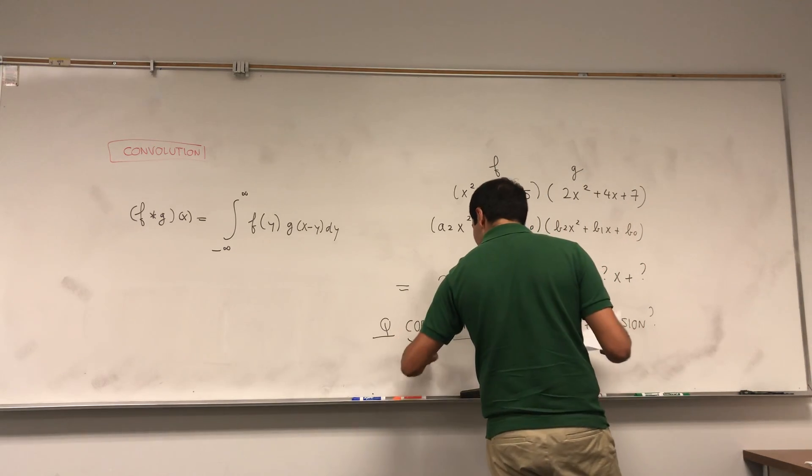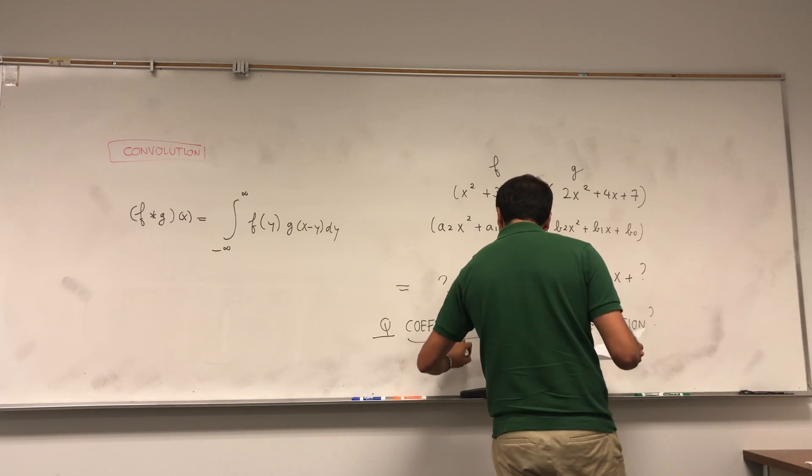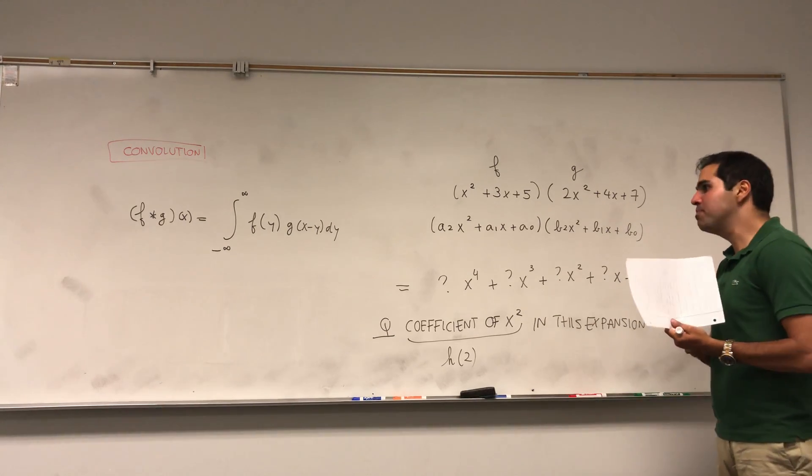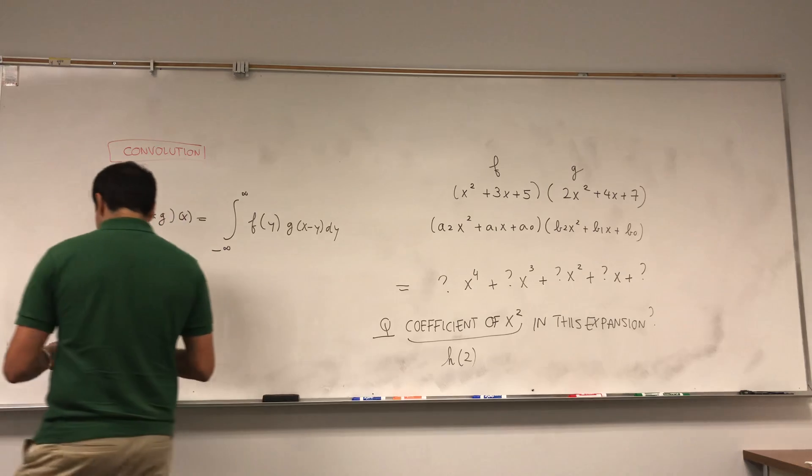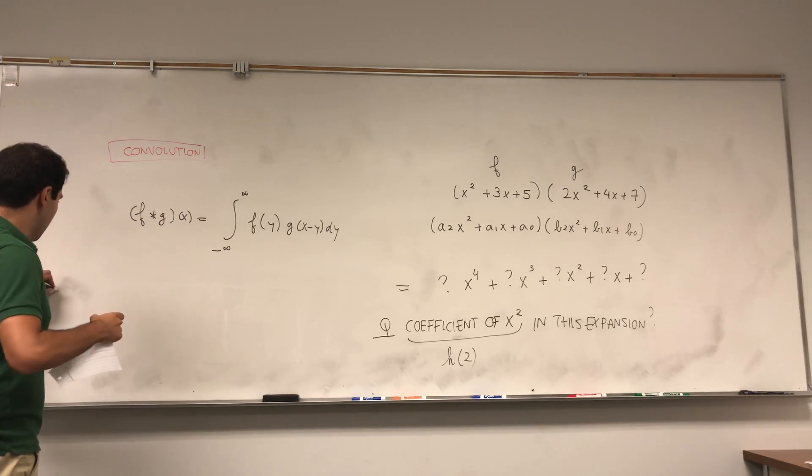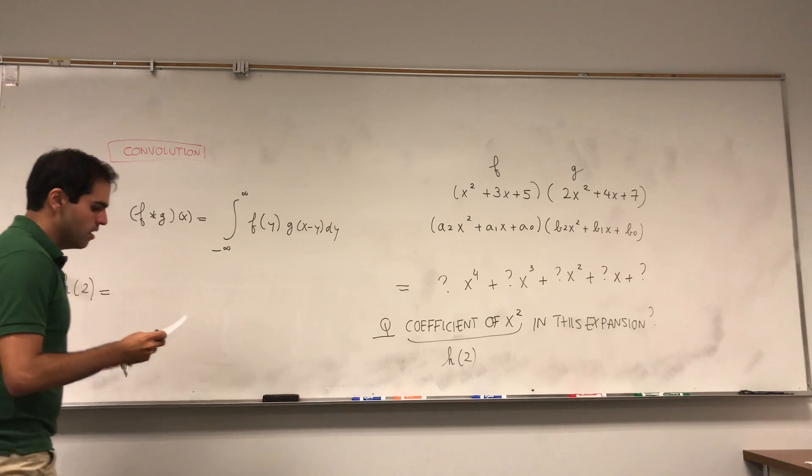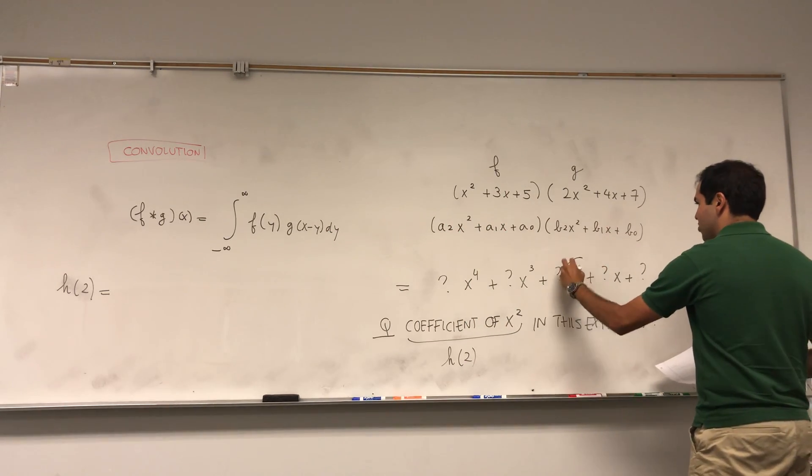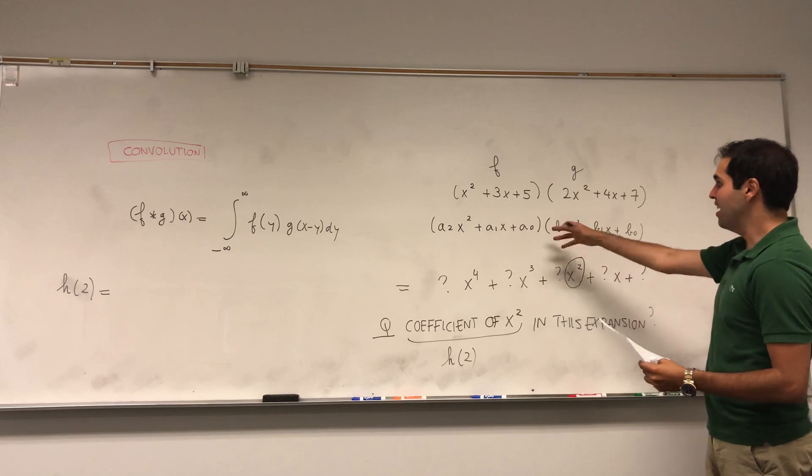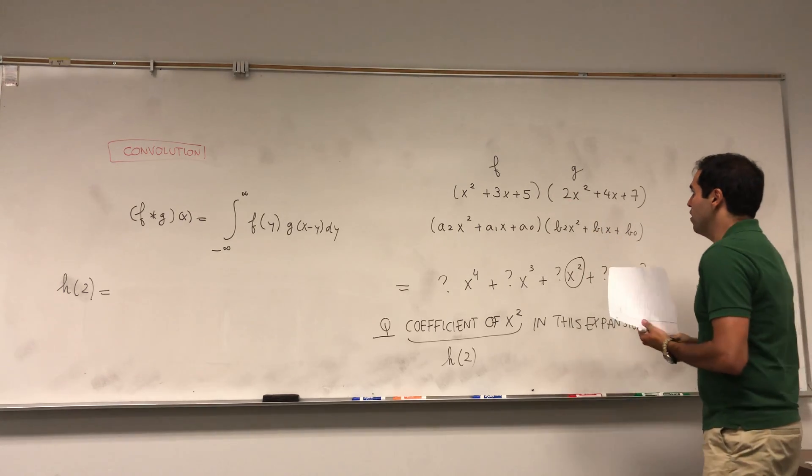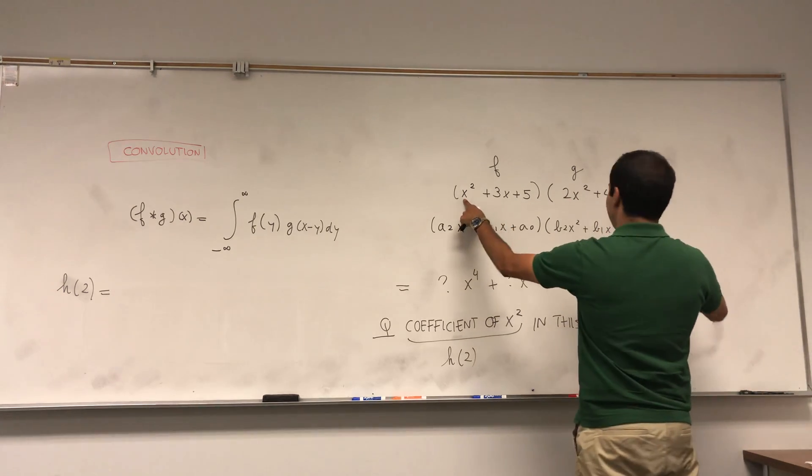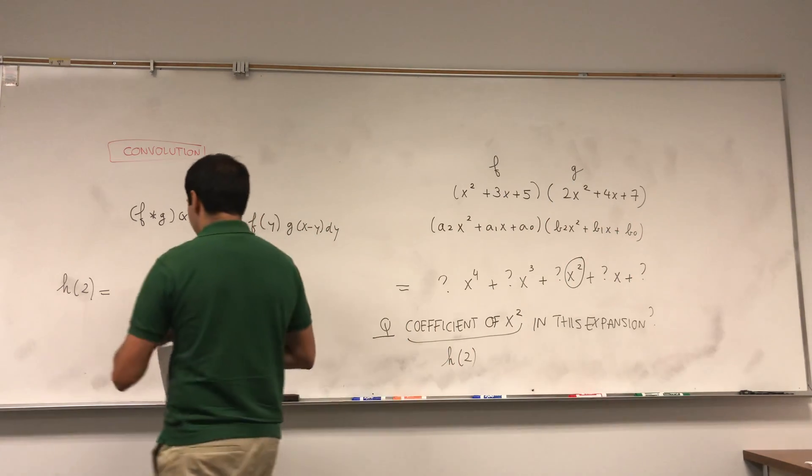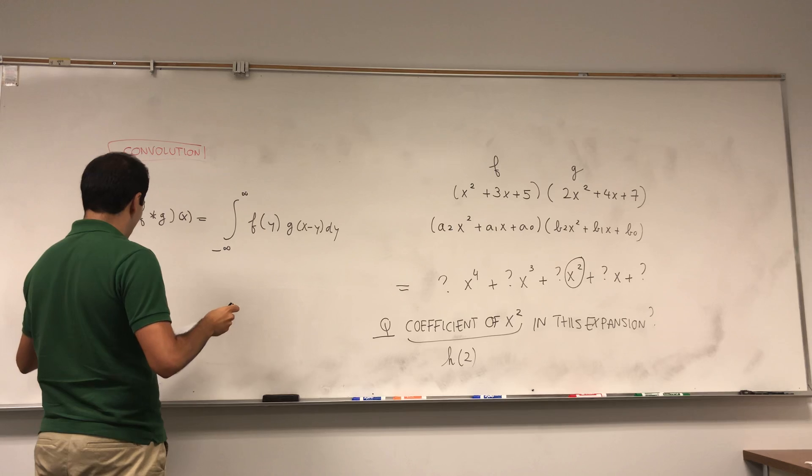What is the coefficient of x² in this expansion, and let's call that coefficient h(2). So if you want the coefficient of x³, it would be h(3). Okay, well let's see. Well, what we have to do to figure out the coefficient of x² is we really have to find the things that sum to 2. For example, we have x² times 7, that gives you 7x². So if you want, 1 times 7, which corresponds to a₂ times b₀.